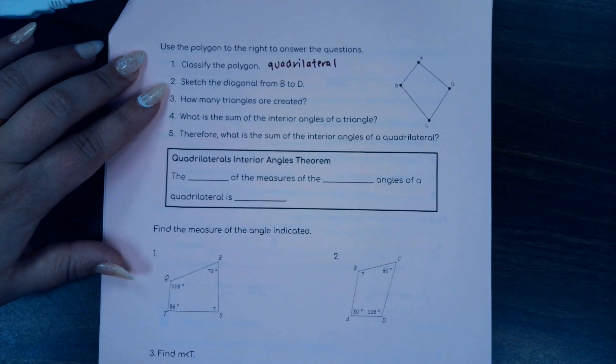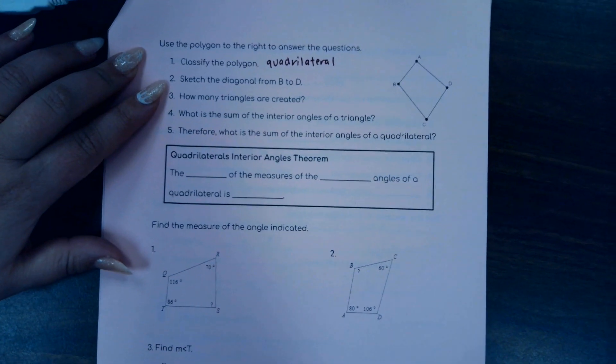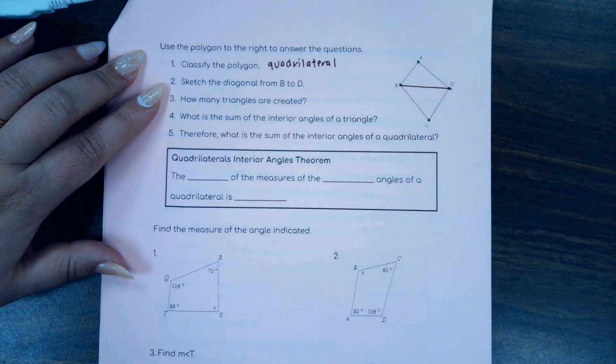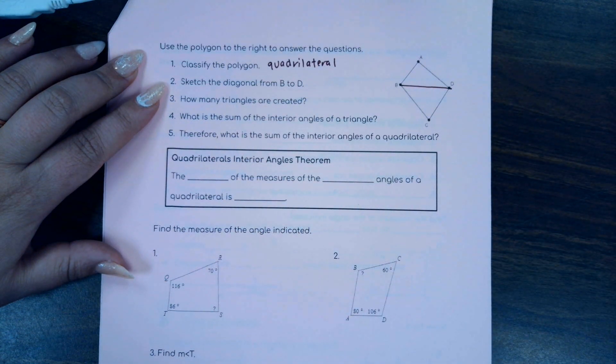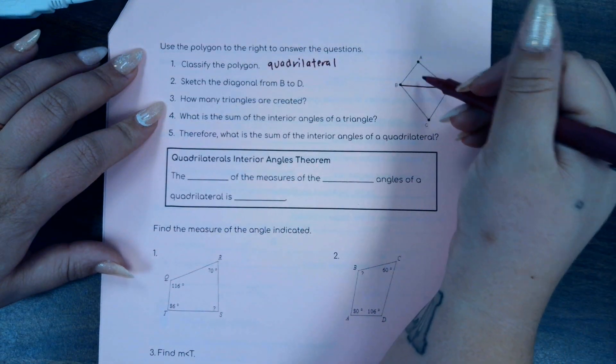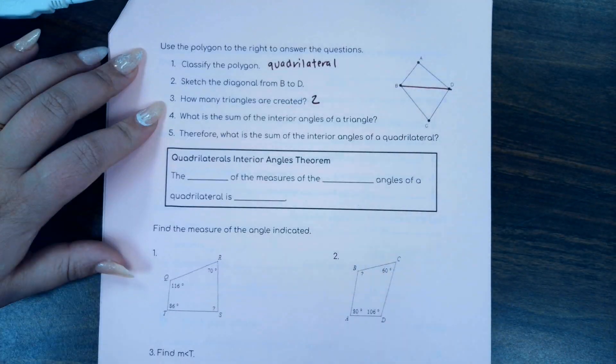Now number two isn't so much a question as a request. So sketch the diagonal from B to D. Do your best, make it as straight as possible. I know it won't be perfect because we don't have rulers. When I do that, how many triangles are created? Well, I've got one on top, one on the bottom. So I've got two triangles.